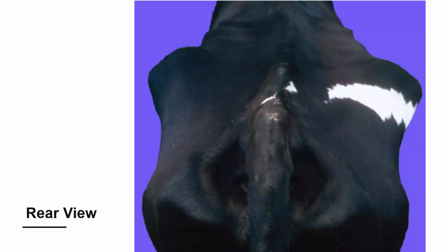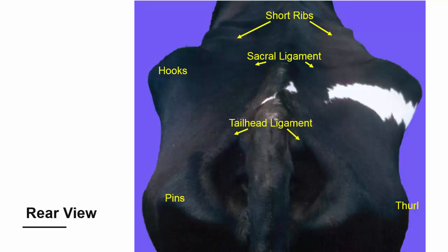From the rear of the cow, we again evaluate the hooks, the pins, the thurl, and the short ribs, and we consider the sacral and tail head ligaments.